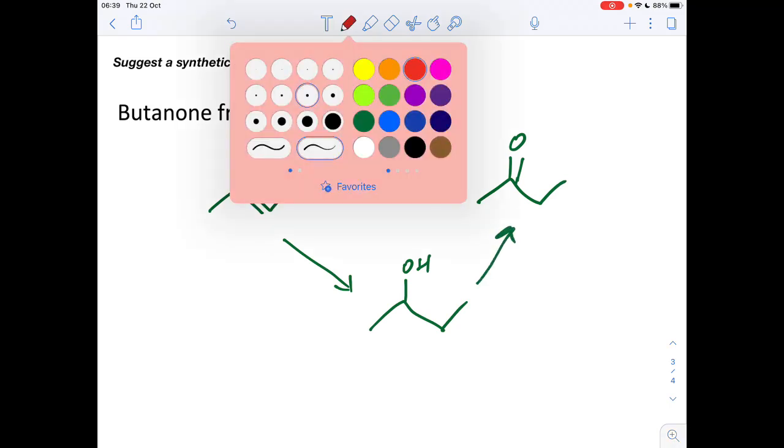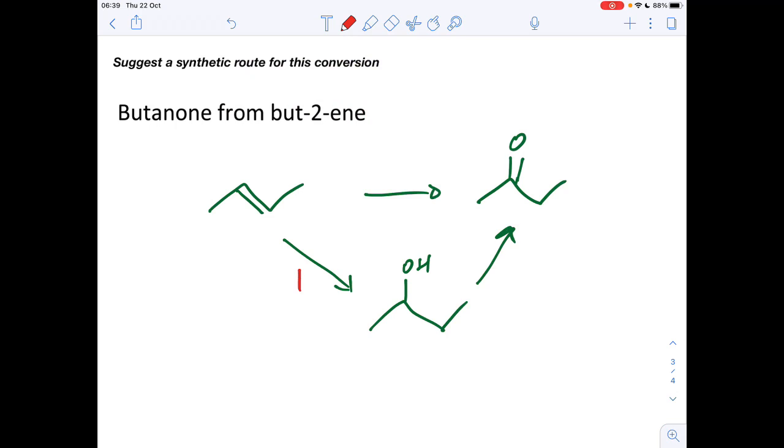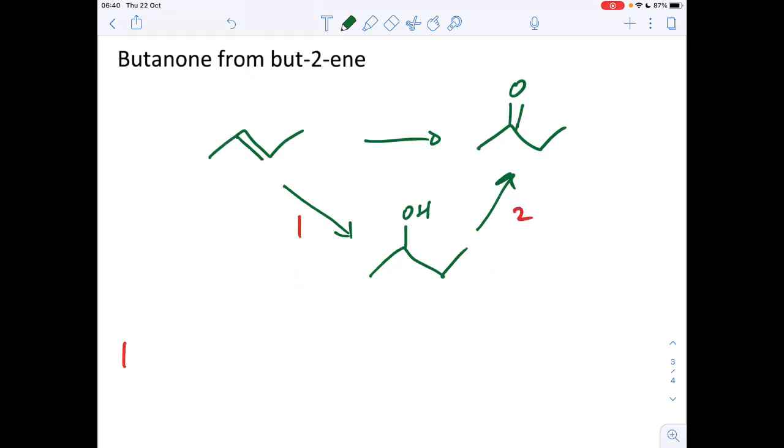So stepwise, we've got step one and step two. So step one, we need to generate the alcohol from the alkene. So we react it with steam. So that's H2O gaseous.